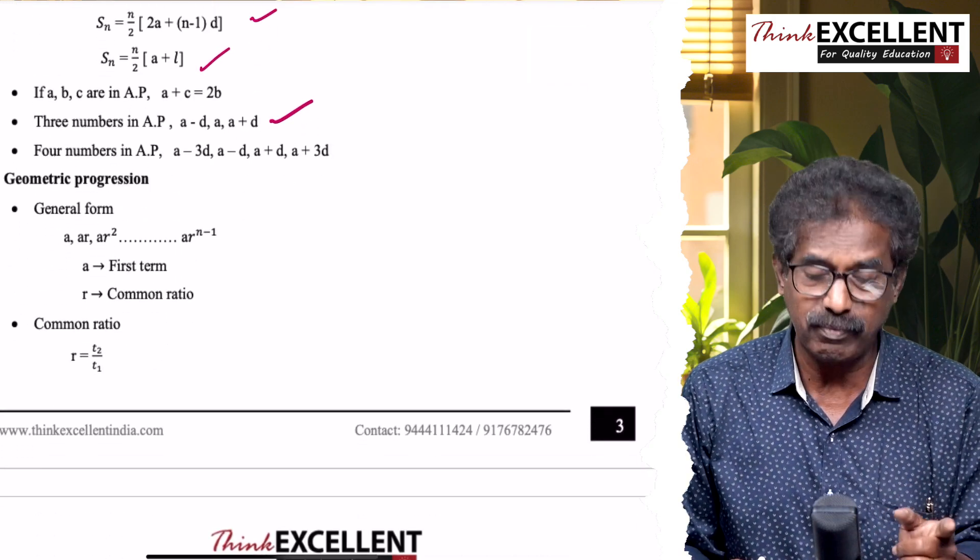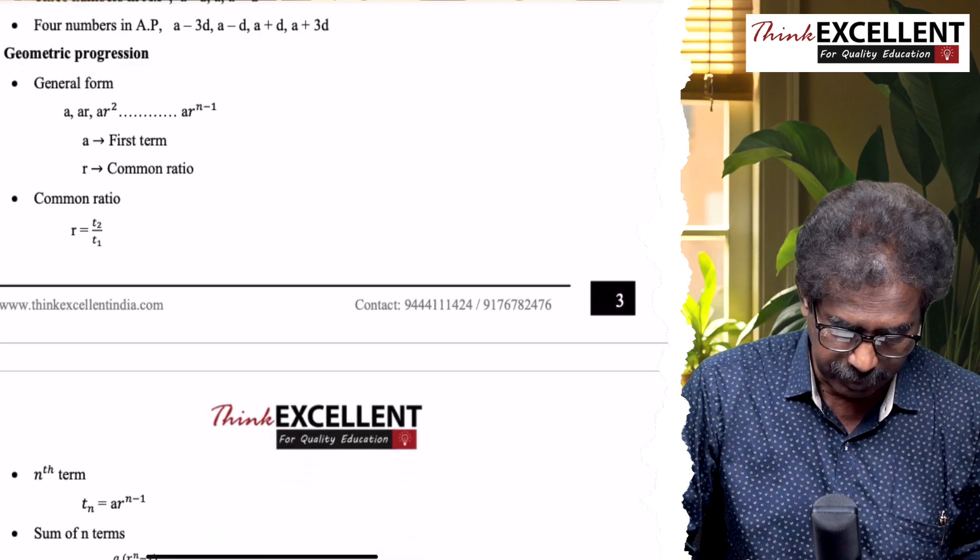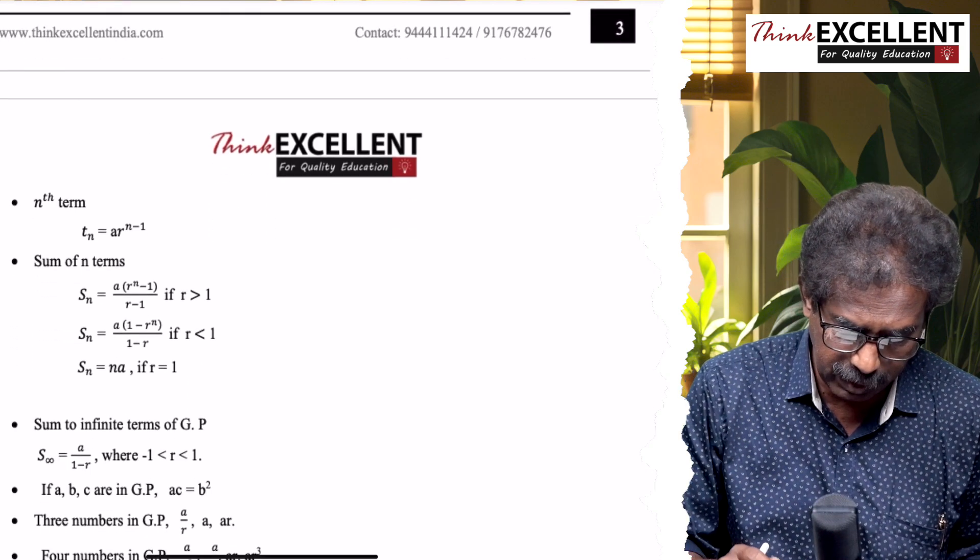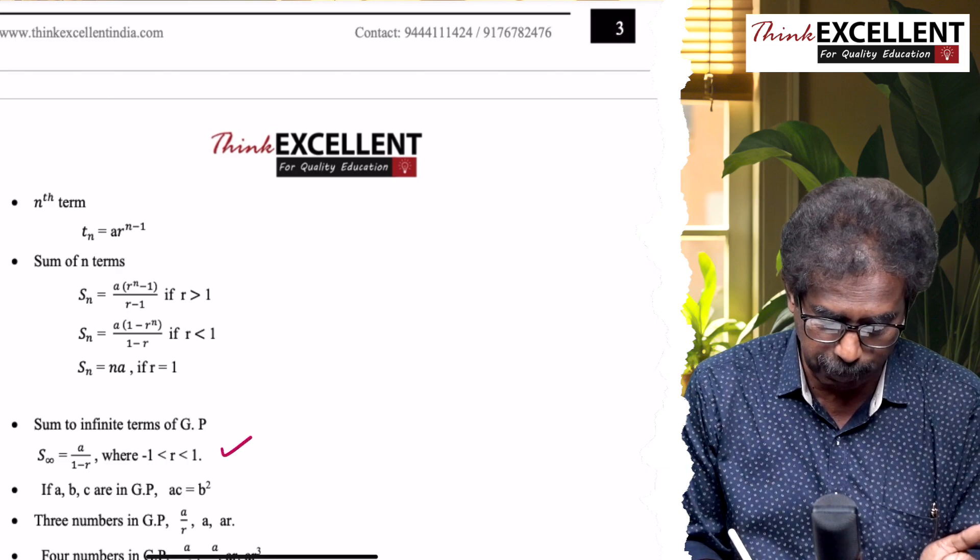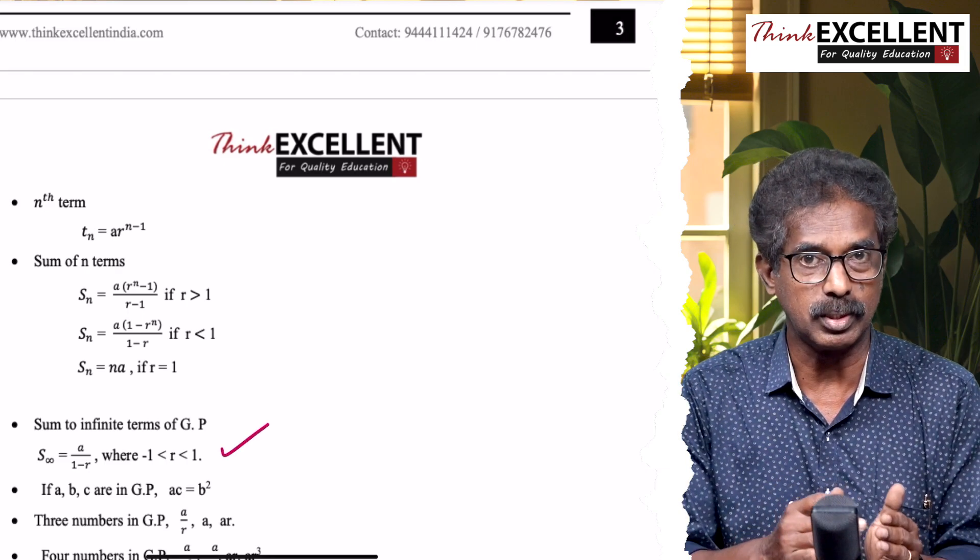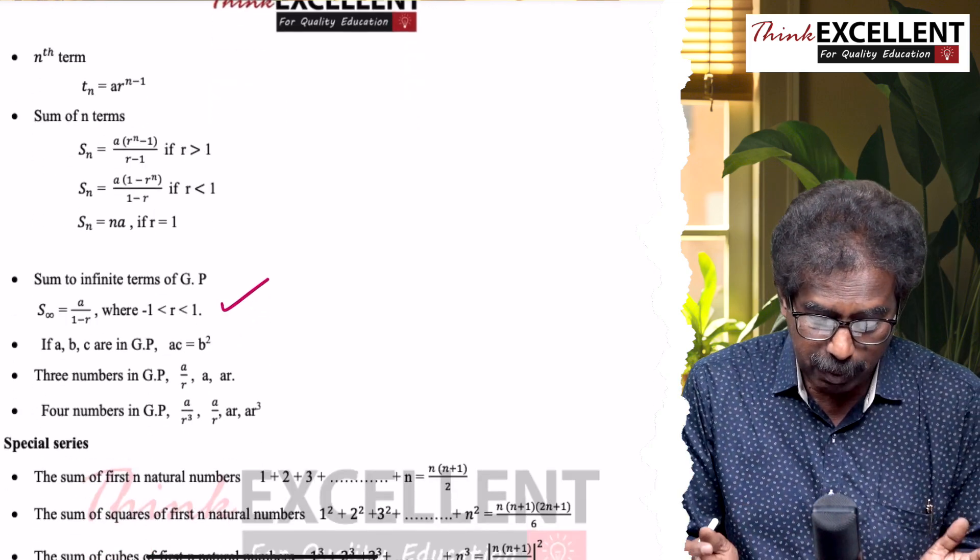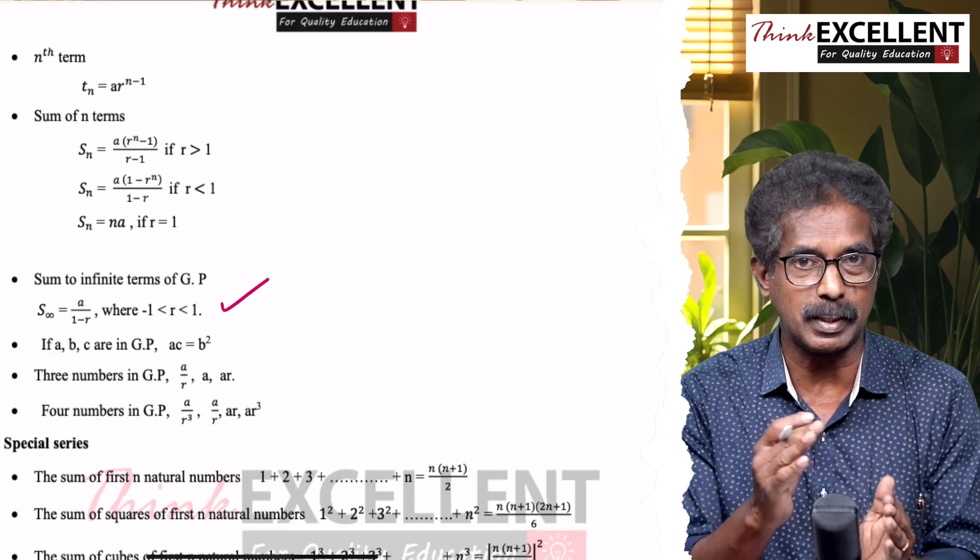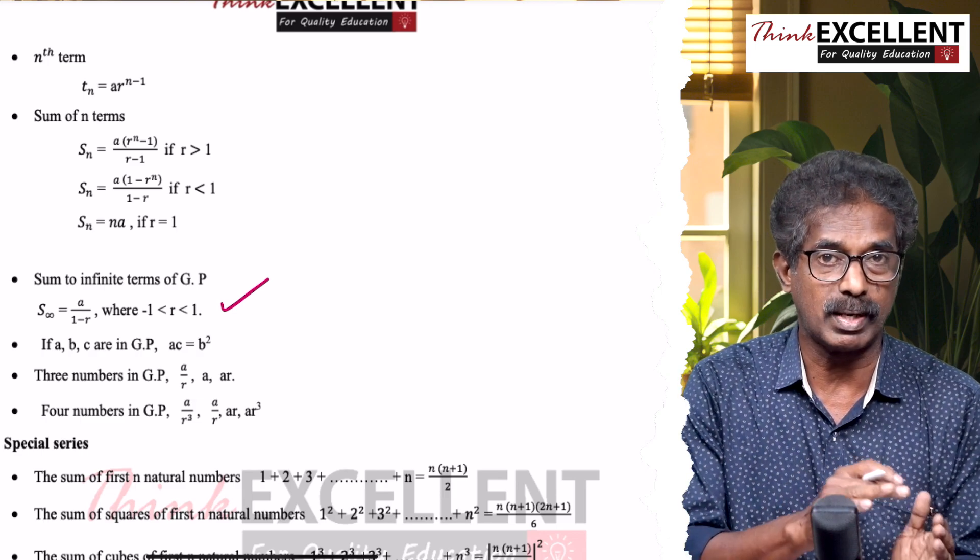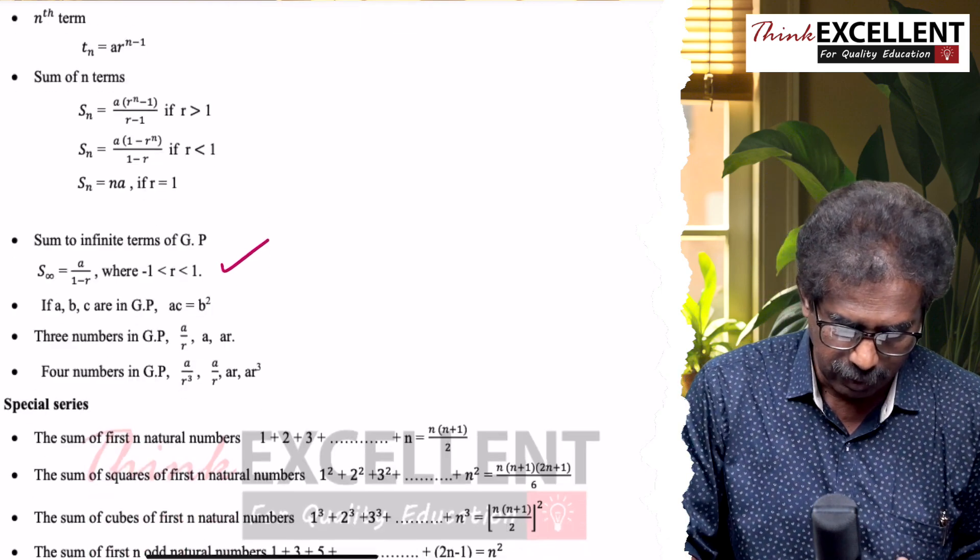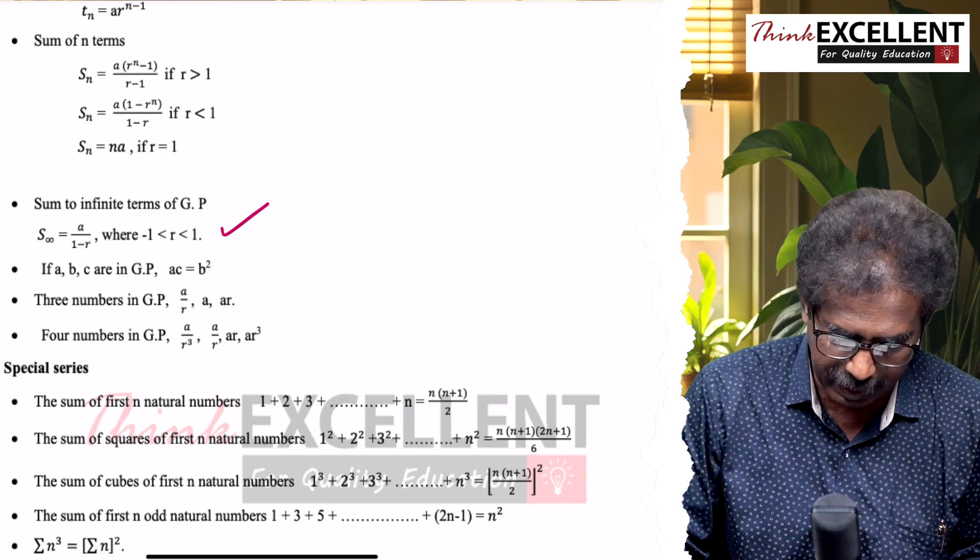Geometric progression. General form: A, AR, AR², etc. R is the common ratio: T2/T1. Then nth term: AR^(n−1). Sum to n terms, there are two formulas when r is more than 1, r is less than 1. Then another very important one: sum to infinity, sum to infinite terms: A/(1−r). That you can use when r is less than 1. Three numbers in GP: A, B, C in GP when A×C = B². First into third equal to the middle term square. Three numbers in GP, very important for five marks: A/R, A, AR.